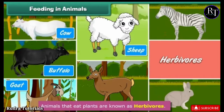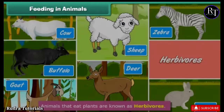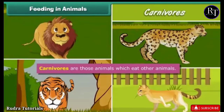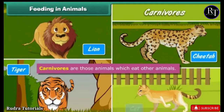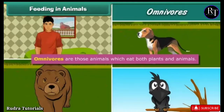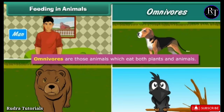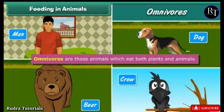Herbivorous examples also include goat, sheep, deer, zebra, and rabbits. Carnivorous are those animals which eat other animals — for example, lion, tiger, cheetah, and cat. Omnivorous animals eat both plants and animals — examples include man, bears, dog, and crow.